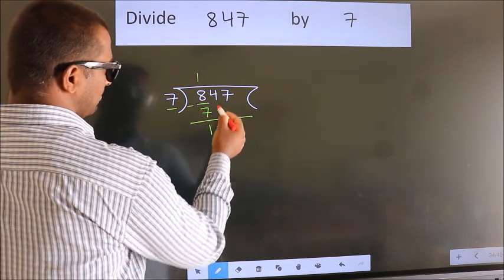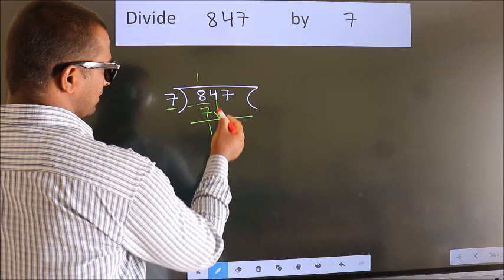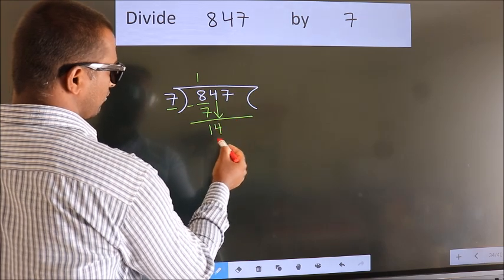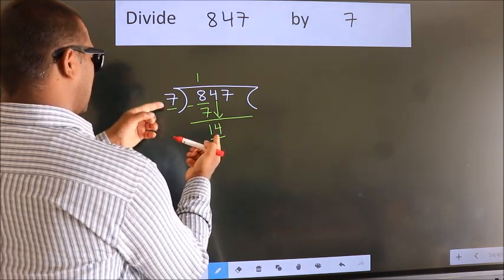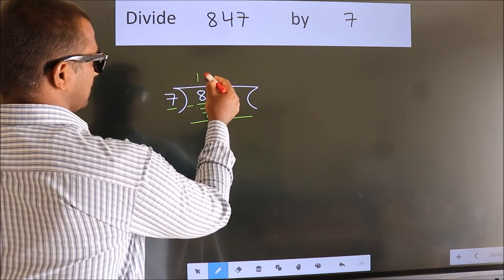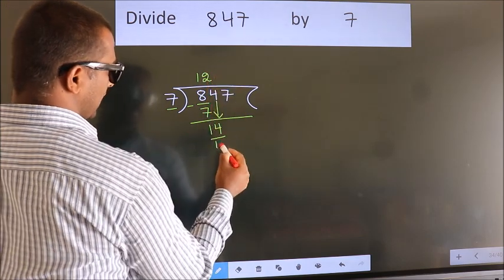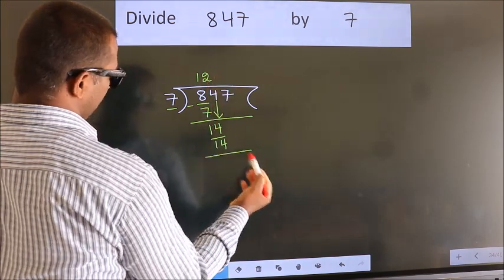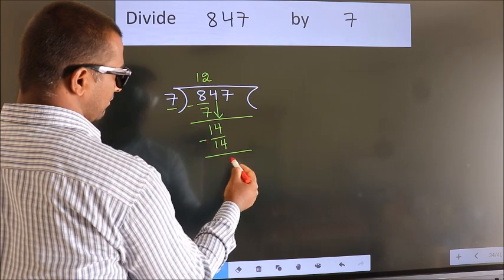After this, bring down the beside number, so 4 down, so 14. When do we get 14? In 7 table. 7 twos, 14. Now we subtract. We get 0.